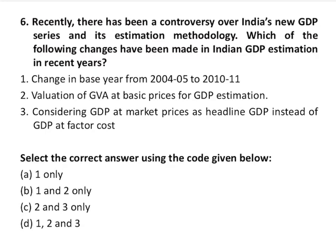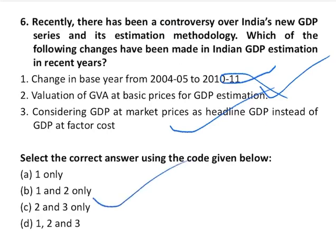Question number six is on India's new GDP series and its estimation methodology. The first statement says the base year changed from 2004-05 to 2010-11 — this is wrong. The correct change was from 2004-05 to 2011-12 in 2015. The second says valuation of Gross Value Added (GVA) at basic prices for GDP estimation — correct. The third says GDP at market prices is now the headline GDP instead of GDP at factor cost — also correct. Statements two and three are correct, so the correct answer is option C.